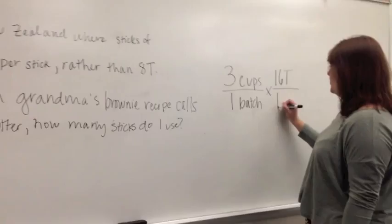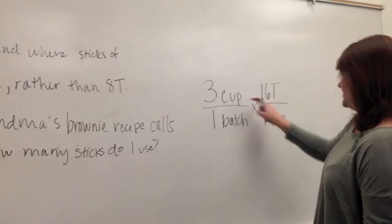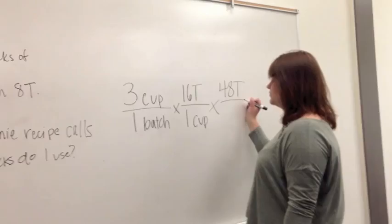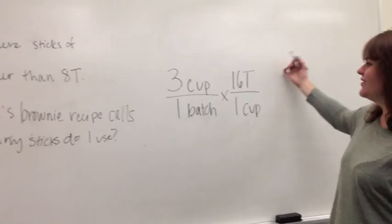And I'm going to multiply that by 16 tablespoons because there are 16 tablespoons in one cup. So you see we have these like terms here. And then I'm going to multiply that by 48 tablespoons over six tablespoons. Wait, no, there are six tablespoons over one stick.